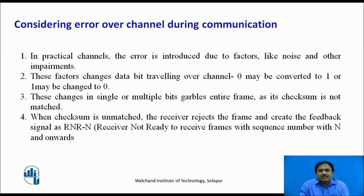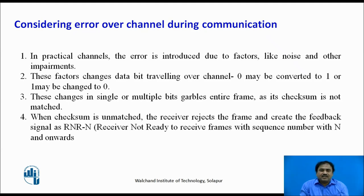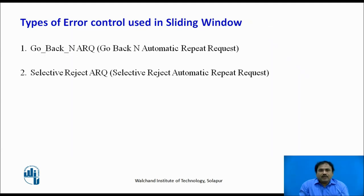Now we will consider errors on the channel during communication. In practical channels, errors are normally found due to noise and various channel parameters. Because of these errors, the data inside a frame gets changed — a 0 may change to 1 or 1 may change to 0. Even a single bit error will garble the entire frame, because it will cause a mismatch in the checksum inserted in the frame. The receiver side then gives feedback as a negative acknowledgement.